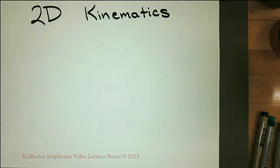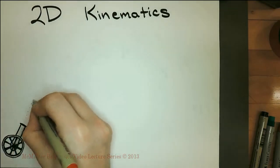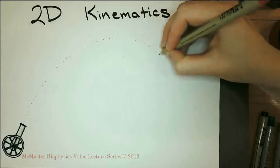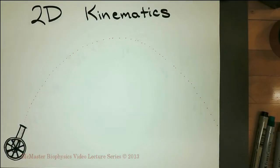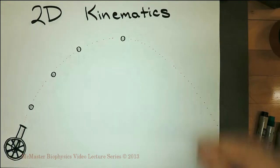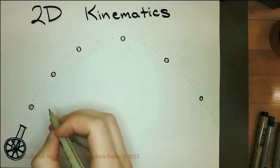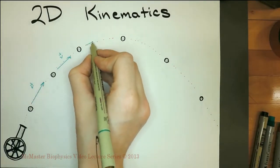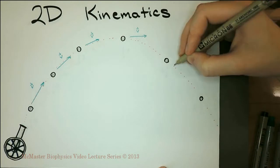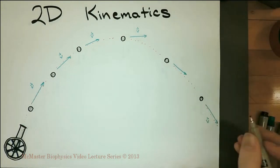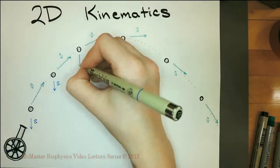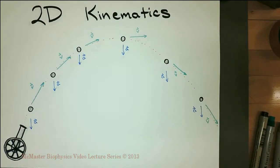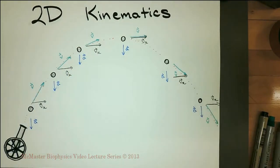Up to this point, we have been discussing kinematics in one dimension. We will now move on to kinematics in two dimensions. Two-dimensional kinematics problems are easiest to analyze when you separate the motion into two sets: motion along the y-axis and motion along the x-axis. The axes can be at any angle but should be 90 degrees to one another. For projectile motion, it is easiest to make one dimension vertical — the direction of acceleration — and the other horizontal, the direction in which velocity is unchanging when there is no air resistance.